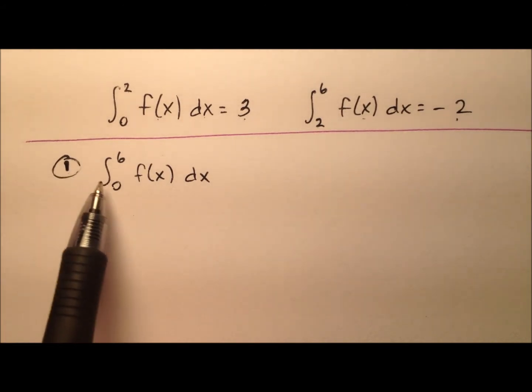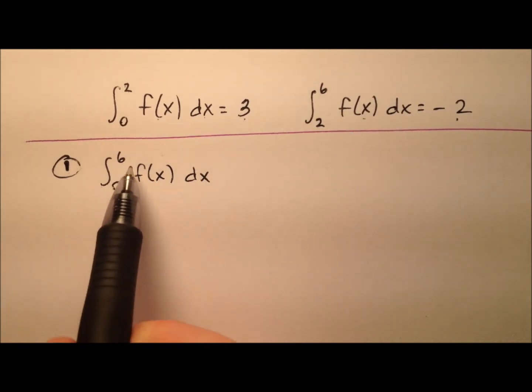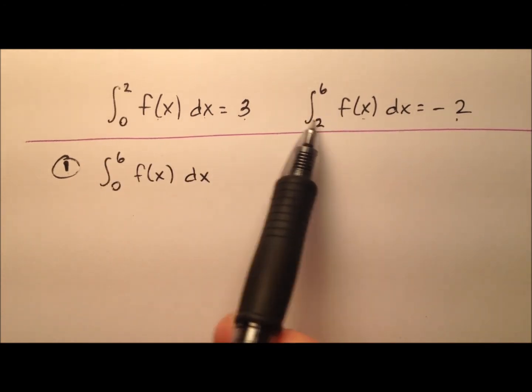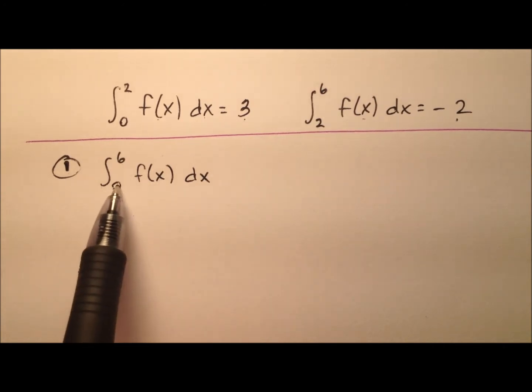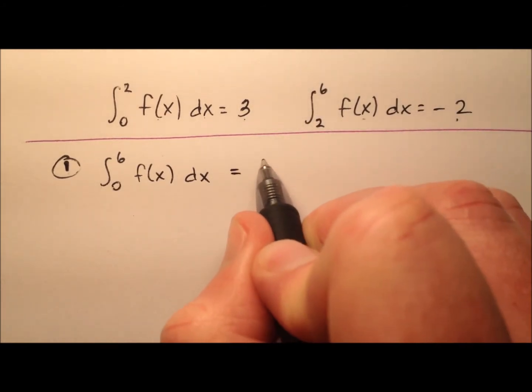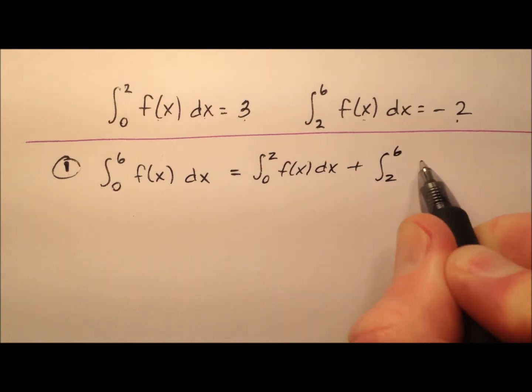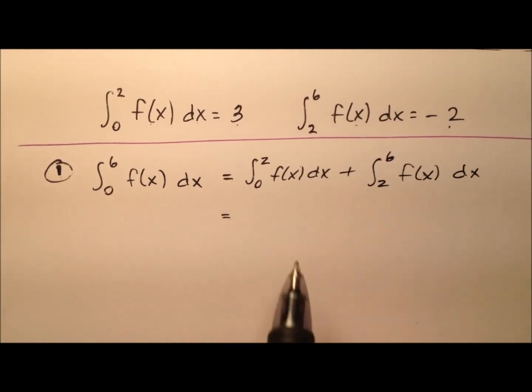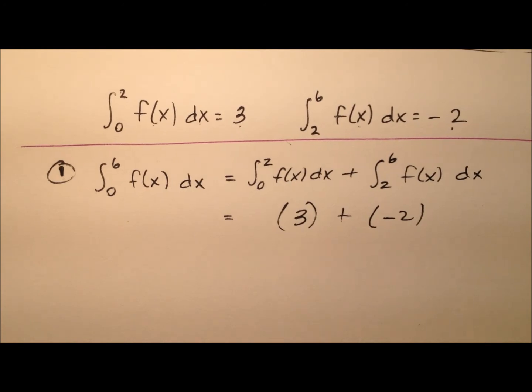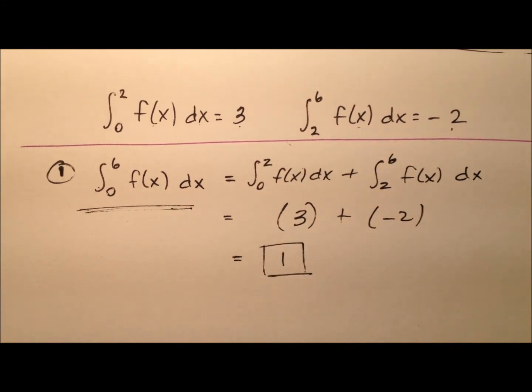In this first example, we're going to evaluate the integral from 0 to 6 of our function. This starts at 0 where the first one started and ends at 6 where the second one ended. Since we have all values from 0 to 6 covered, we can break this down: the integral from 0 to 6 equals the integral from 0 to 2 plus the integral from 2 to 6. The first one is 3, and the second is negative 2, so the integral from 0 to 6 equals 1.